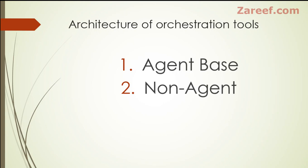Broadly, there are two types of architecture for any kind of orchestration tool: agent-based and non-agent. In one kind of system there is an agent — a small software installed on your new inventory, your new machine or server — and then there are another kind of tools where you don't need to install anything on your new nodes or machines.